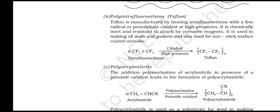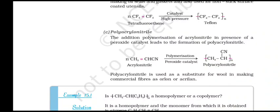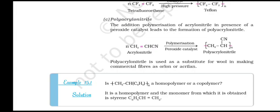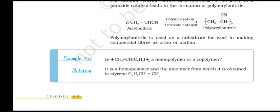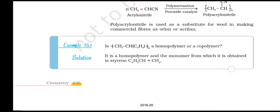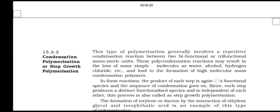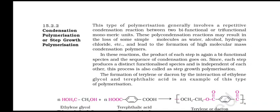Polytetrafluoroethylene (Teflon): Teflon is manufactured by heating tetrafluoroethylene with a free radical or persulfate catalyst at high pressure. It is chemically inert and resistant to attack by corrosive reagents. It is used in making seals and gaskets and also for non-stick surface coated utensils. Polyacrylonitrile: the addition polymerization of acrylonitrile in the presence of a peroxide catalyst leads to the formation of polyacrylonitrile. Polyacrylonitrile is used as a substitute for wool in making commercial fibers such as Orlon or Acrilan.